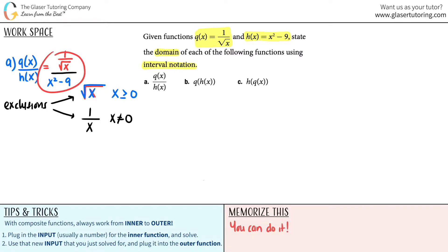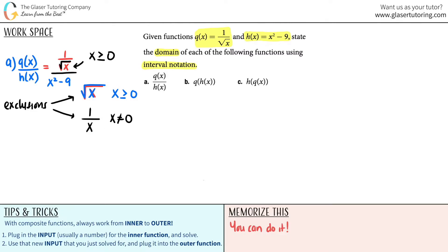Let's find the domain of the function we just stated. It looks like we have two denominators — a little denominator here, and then the divided-by-the-whole denominator here. This is just a square root but it's also in a denominator, so we've got a double whammy. The square root tells me that x can be anything greater than or equal to zero. However, the denominator tells me x cannot be equal to zero, so I have to strip that equal part out. As far as the first part of the function, x can only be greater than zero.